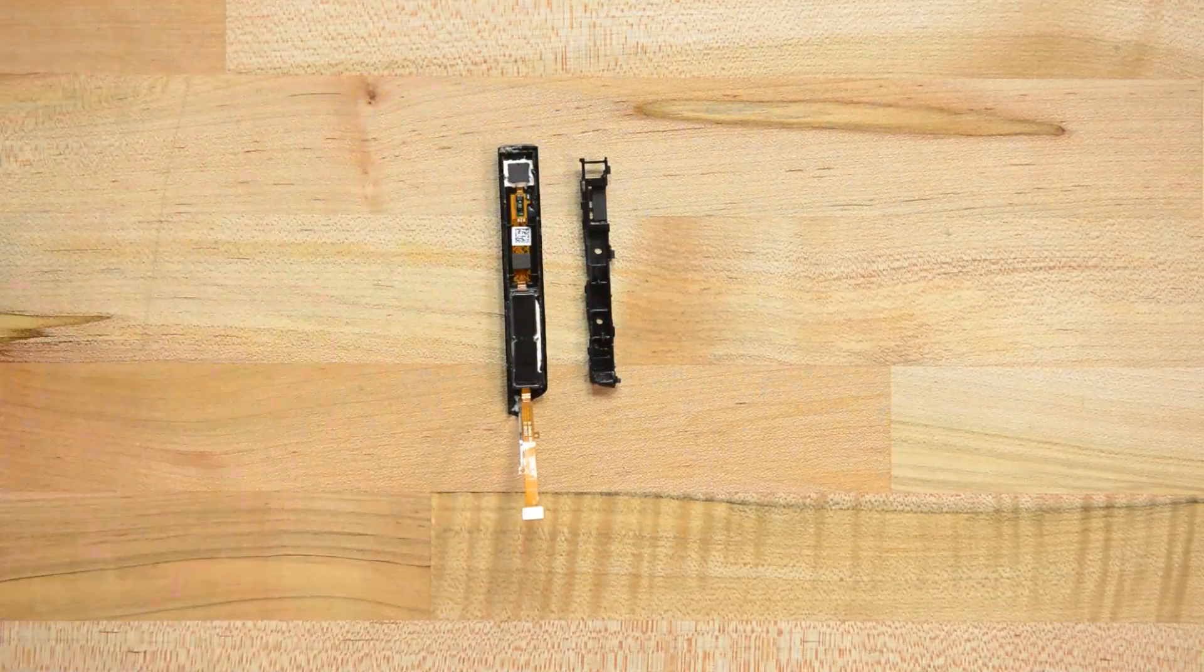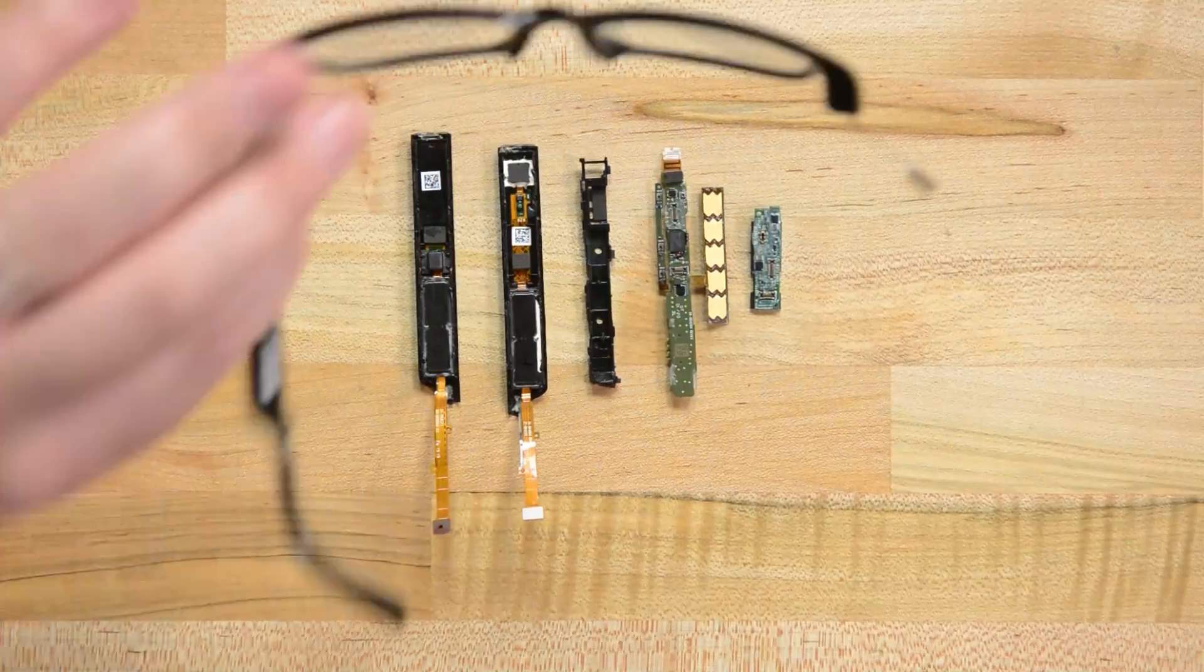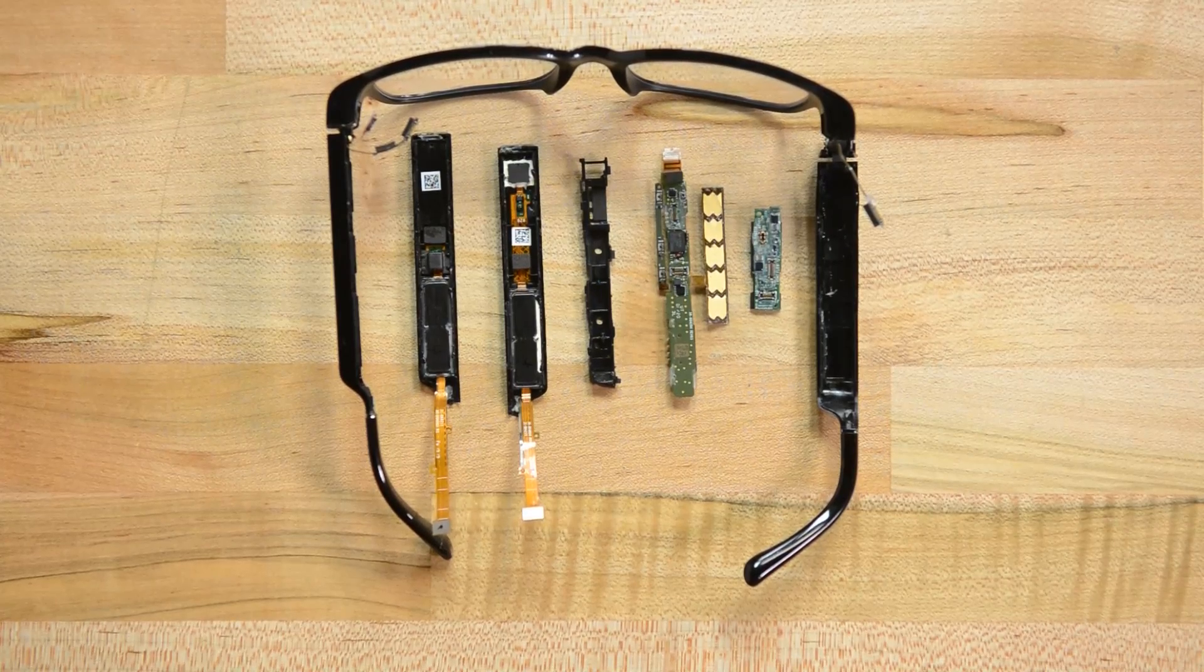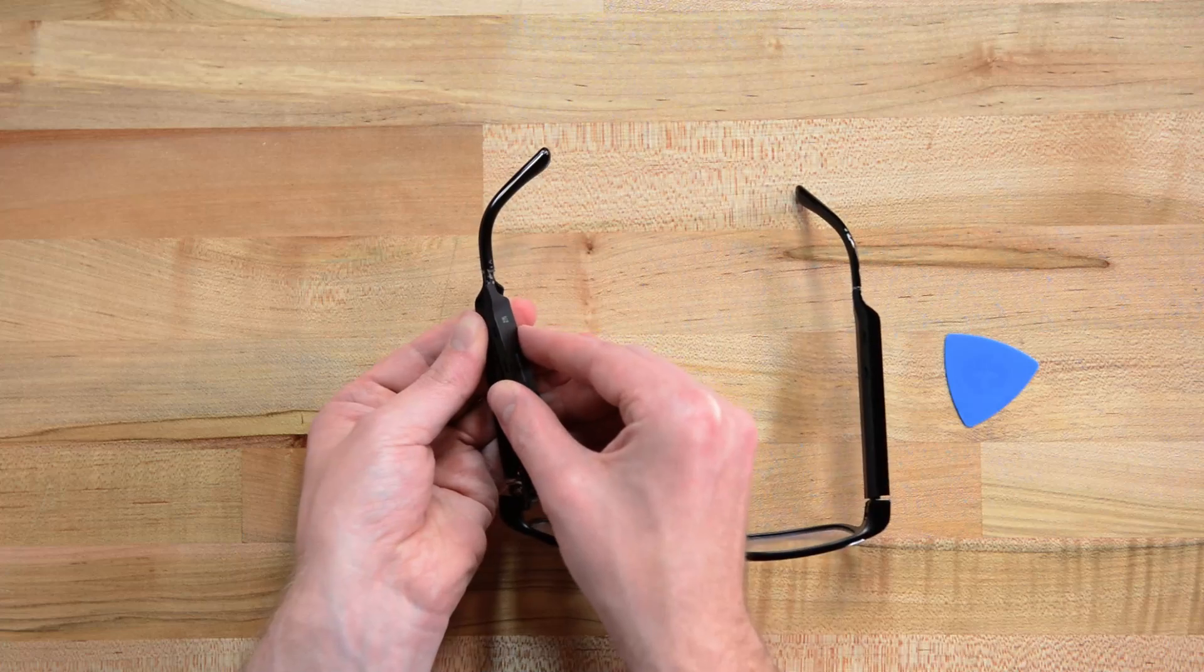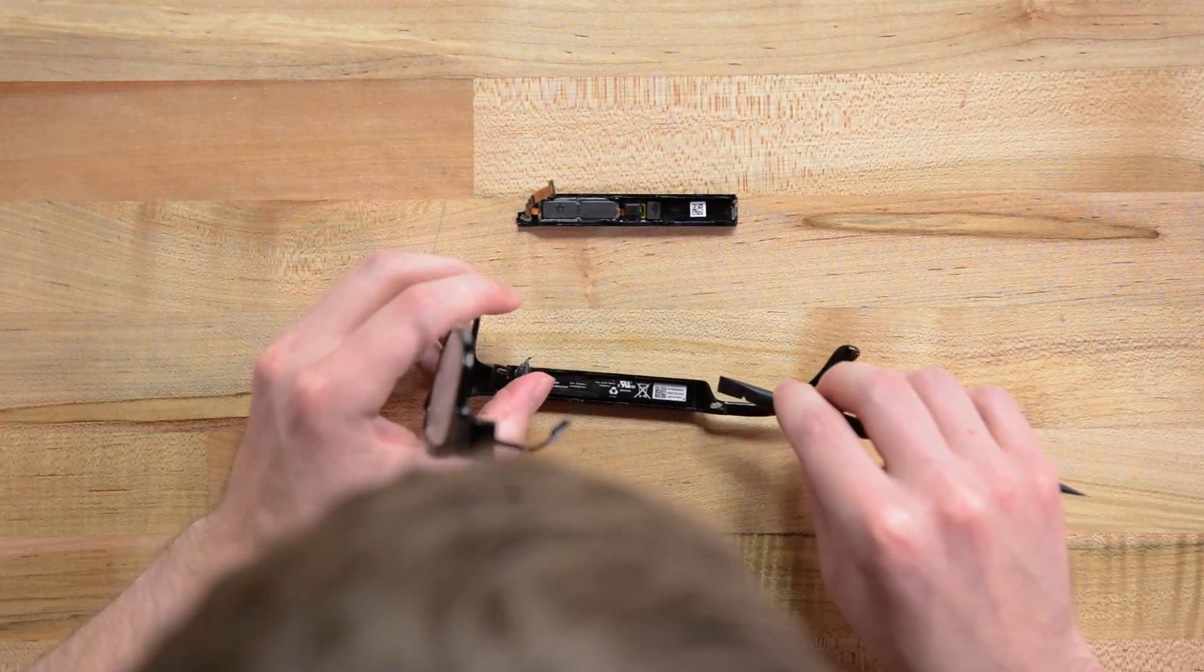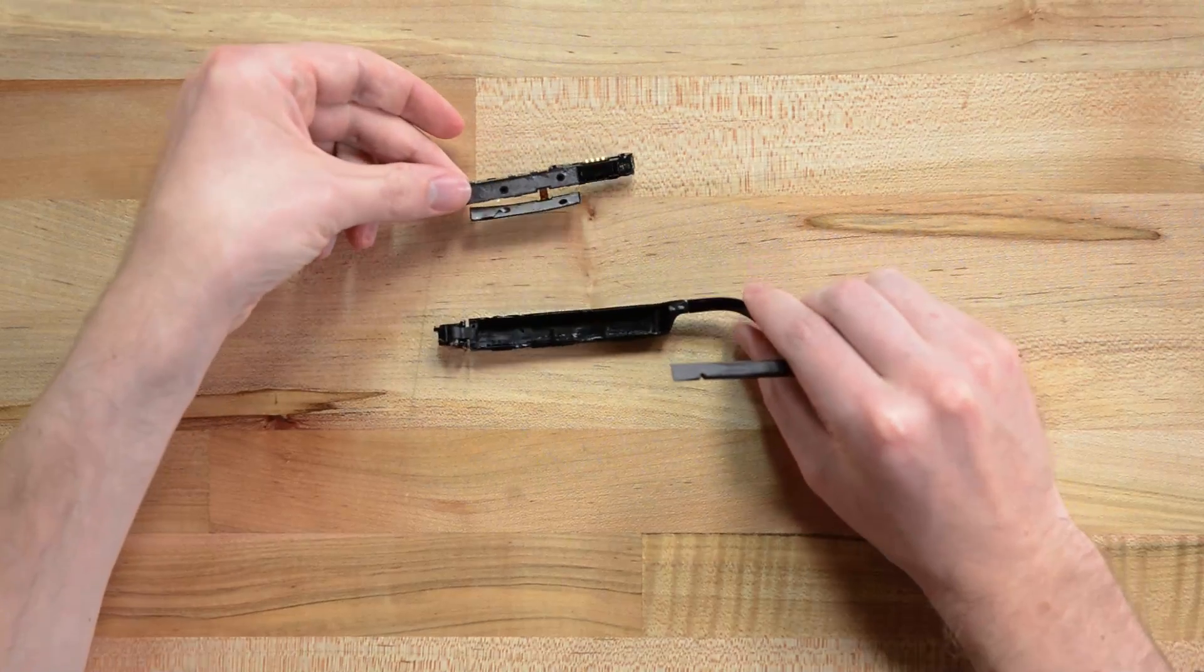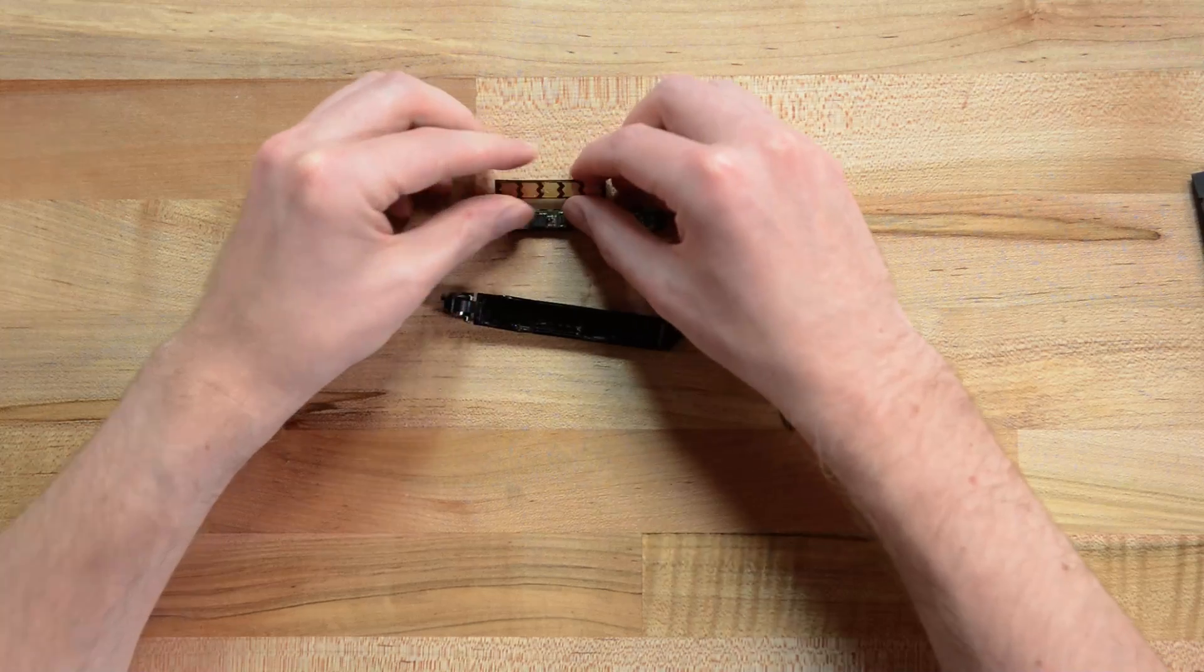So how repairable are the Echo frames? Well given this is the first pair of smart glasses we've torn down at iFixit we are going to hold off on scoring them until we have a little more data about common repairs and other devices in the category. That said assuming you could get replacement parts, something Amazon doesn't have a great track record for, the frames are actually fairly modular and you could conceivably perform battery, speaker, or even a full motherboard replacement without too much drama or destruction. I wouldn't say they are designed to be serviced, but given the form factor I'm pleasantly surprised.